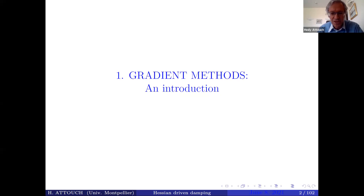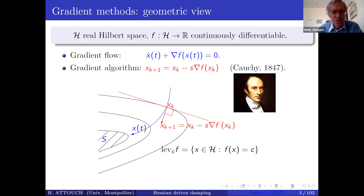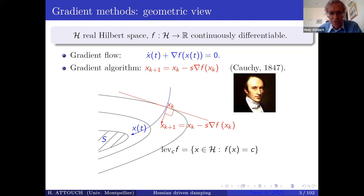I'll start with a general introduction about the gradient method in order to fix the notation and the main objective of this lecture. We work in a general real Hilbert space H, since we are interested in both finite and infinite dimensional problems, and want to minimize a function f from H into R which is differentiable. We assume we have access to the gradient of f at any point x of H. Unless specifically specified, we don't assume f to be convex — we're interested in critical points or local minima. When f is convex, we will specify it.